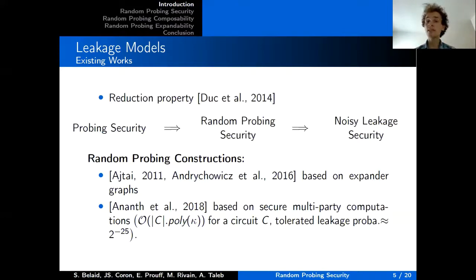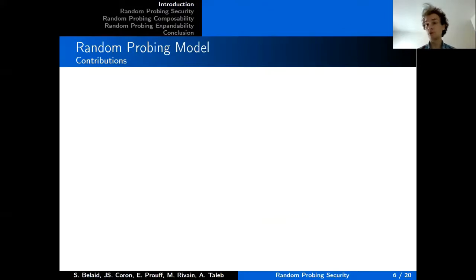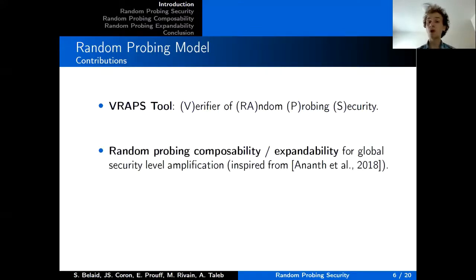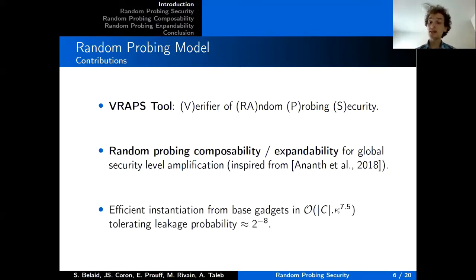Our work is another one based in the random probing model, and our contributions are threefold. We first introduce a new automatic formal verification tool that we call RAPS, which given a small circuit computes the parameters for which it is random probing secure. We also provide new composition and expansion properties to make small circuits composable in a global random probing secure circuit while achieving arbitrary security levels. And we show the complexity of such a strategy, including an instantiation with new construction from base gadgets achieving a complexity in kappa to the 7.5, while tolerating a leakage probability of about 2 to the minus 8.